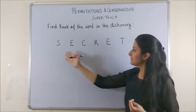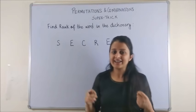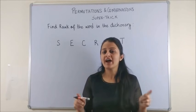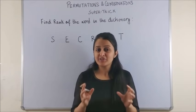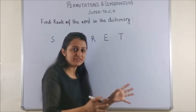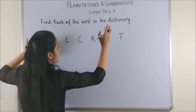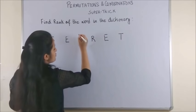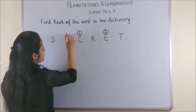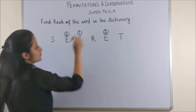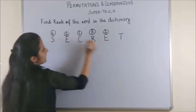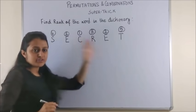The question would say, if alphabets of the word SECRET are arranged in a dictionary with or without meaning, what is the rank of this word? Let's reveal the secret behind this word SECRET. Just like the previous video, we would rank these alphabets, keeping them at their position. C is the first amongst all of them. Then occurs E. E is occurring twice, so rank both of them as two. Next in the sequence would be R followed by S and then T.